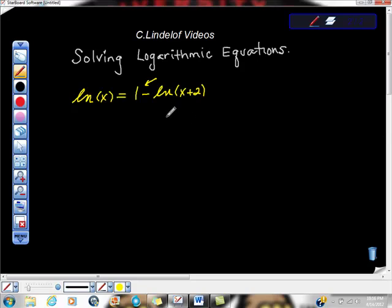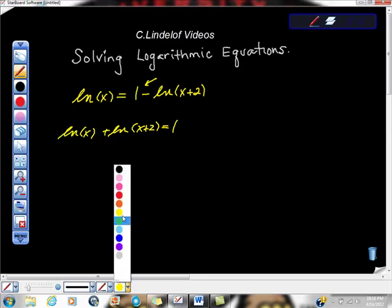So you have to kind of think your way through this a little bit. So I think what I'm gonna do is I'm gonna move all my LN stuff to one side. Let's see what happens if we do that. So now give me ln(x), and then I'm gonna add ln(x+2) to both sides, so it gives us ln(x) plus ln(x+2) equals 1.